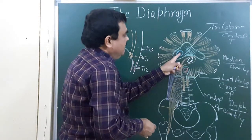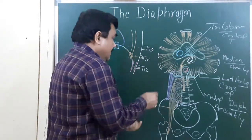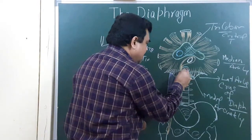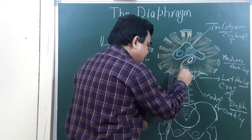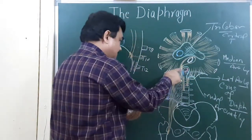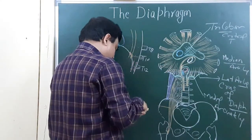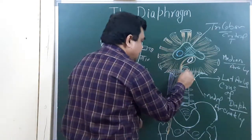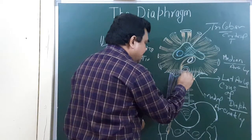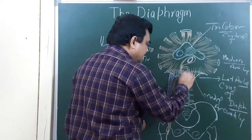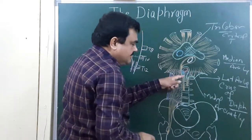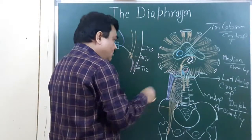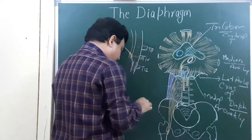The structures passing through the aortic opening: here is the aortic opening. Along with the aorta, one structure is the azygous vein — azygous vein passes through this aortic opening. Another structure is the thoracic duct; thoracic duct also passes through this aortic opening.